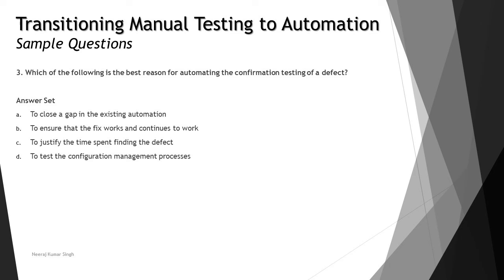Question three: which of the following is the best reason for automating the confirmation test of a defect? We recently covered the factors to consider when automating confirmation testing. The options are: A) to close a gap in the existing automation, B) to ensure that the fix works and continues to work, C) to justify the time spent finding the defect, and D) to test the configuration management process.